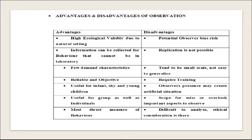Some limitations are also there. Potential observer bias is one of its highest risks, as the observer is a human being with predisposed biasness. Replication is not possible as it cannot be controlled. It tends to be small-scale and not easily generalizable. Observation as a technique requires expertise and training. Sometimes the observer's presence may create artificial situations that hamper the free flow of observation. There is scope for missing or overlooking important aspects, and it is difficult to analyze. Critical considerations are also there.